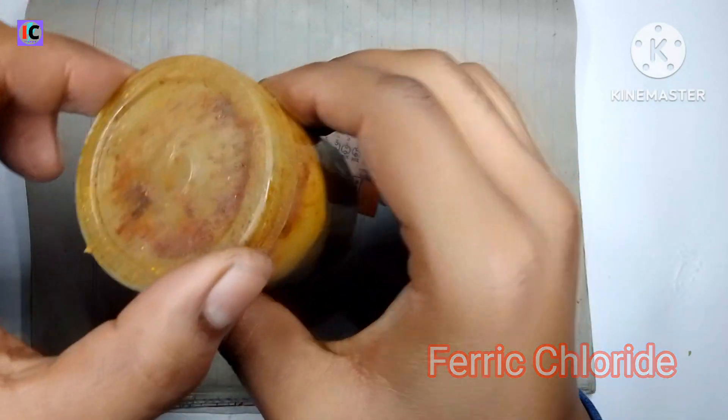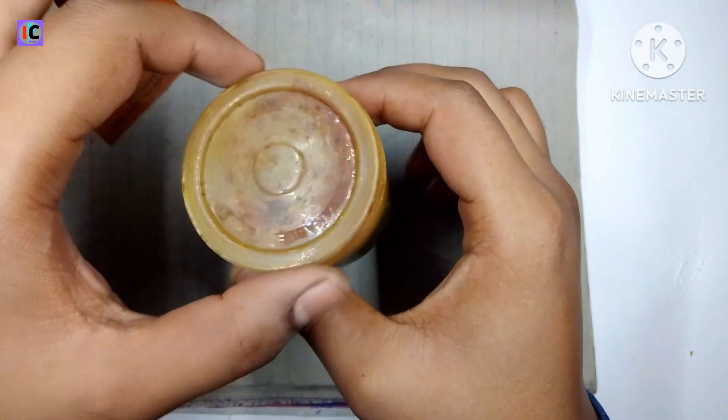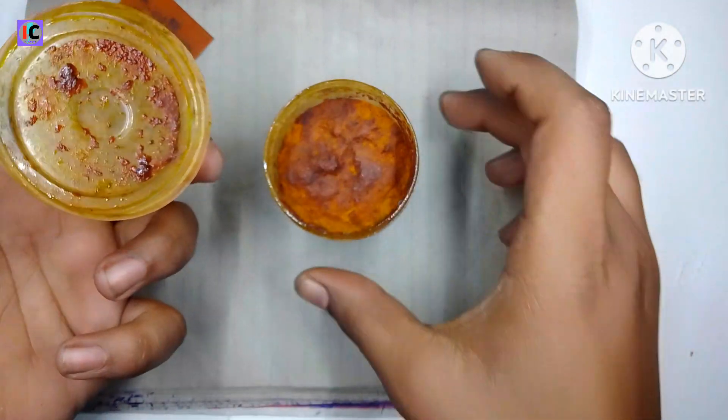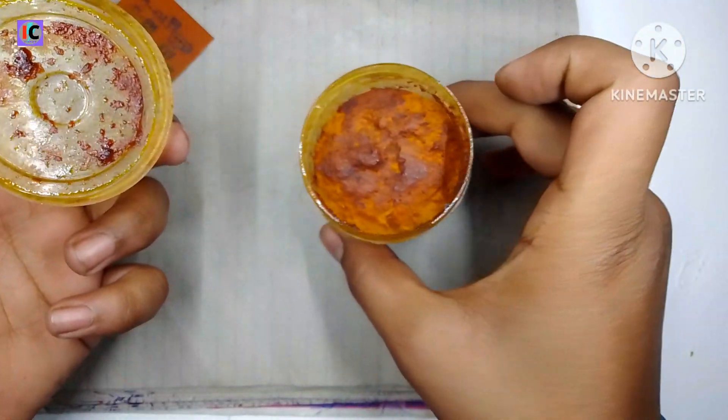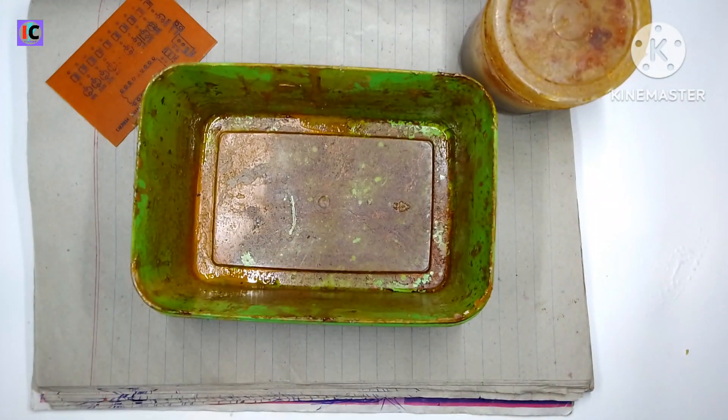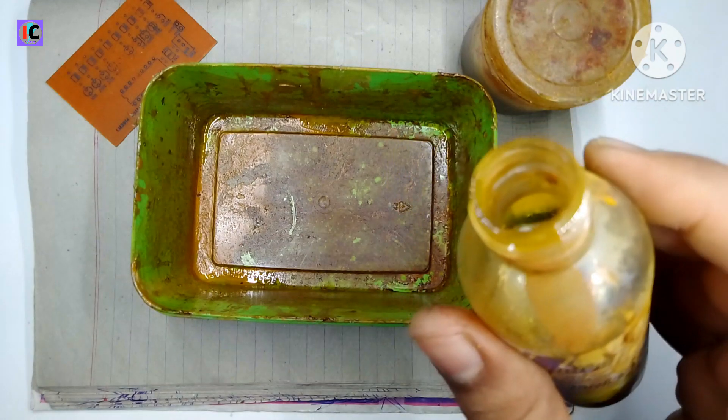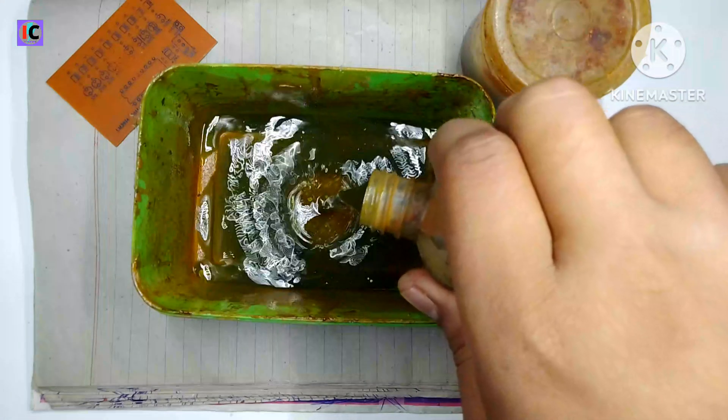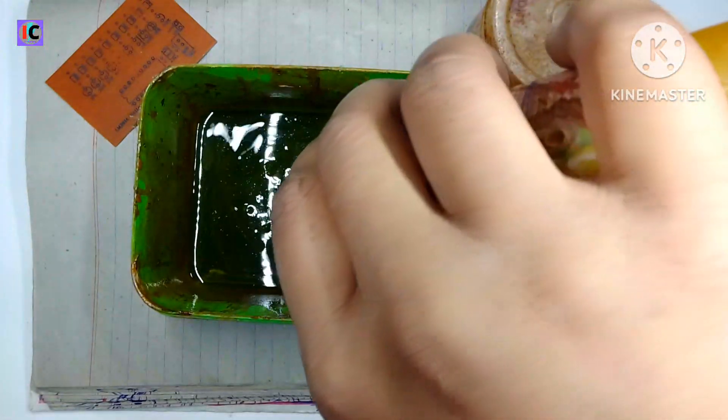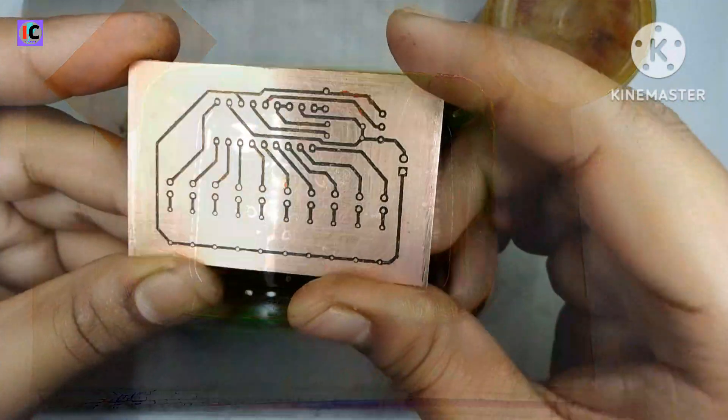For the etching process, here I am using ferric chloride which will remove the external copper from the PCB. I am using a plastic cup for doing this. Here I have a solution of ferric chloride in which I have added water and ferric chloride compound.